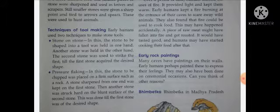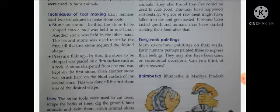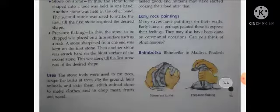They also found that fire could be used to cook food — aur phir woh jaanwaron ko maar kar usme pakaya karte the. This may have happened accidentally — a piece of raw meat might have fallen into the fire and got roasted. It would have tasted good. Yaani aag jal rahi thi, ussi mein meat ka kachcha part thoda sa aag mein gir gaya aur usko taste kiya gaya, toh achha taste aaya. Toh logon ne phir kachcha meat khaana band kar diya aur usse paka kar khaaya karte the.